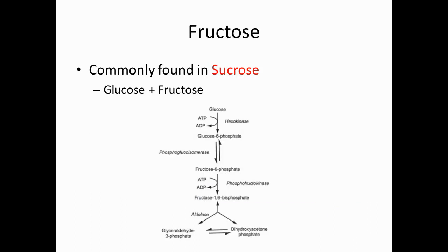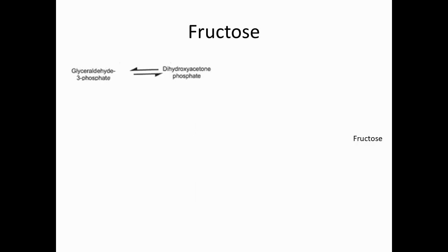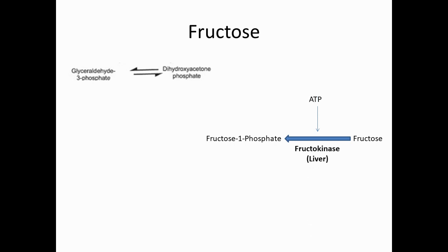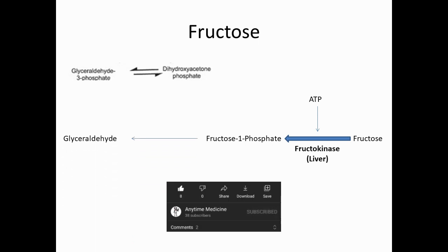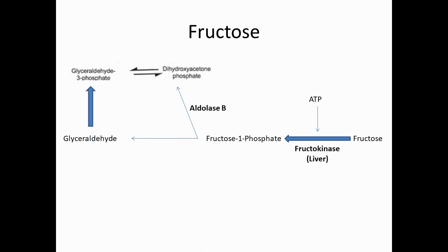Fructose is commonly found in sucrose, which is a combination of glucose and fructose. Fructose enters the glycolysis pathway by first converting into fructose-1-phosphate with the help of the enzyme fructokinase, commonly found in the liver, using ATP. Fructose-1-phosphate then converts into glyceraldehyde and dihydroxyacetone phosphate with the help of aldolase B.